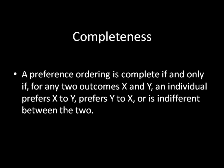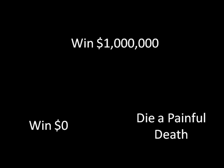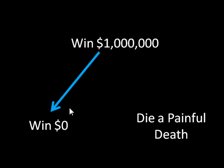To see what that means, let's look at three outcomes: winning a million dollars, winning zero dollars, and dying a painful death. We might say that an individual prefers winning a million dollars to winning zero dollars. This arrow runs from the more preferred outcome to the lesser preferred outcome — the point of the arrow forms a greater than sign pointing at the more preferred outcome. This preference relation as stated is not complete because we don't have any information about whether the person prefers a million dollars to dying a painful death, or prefers winning zero dollars to dying a painful death.